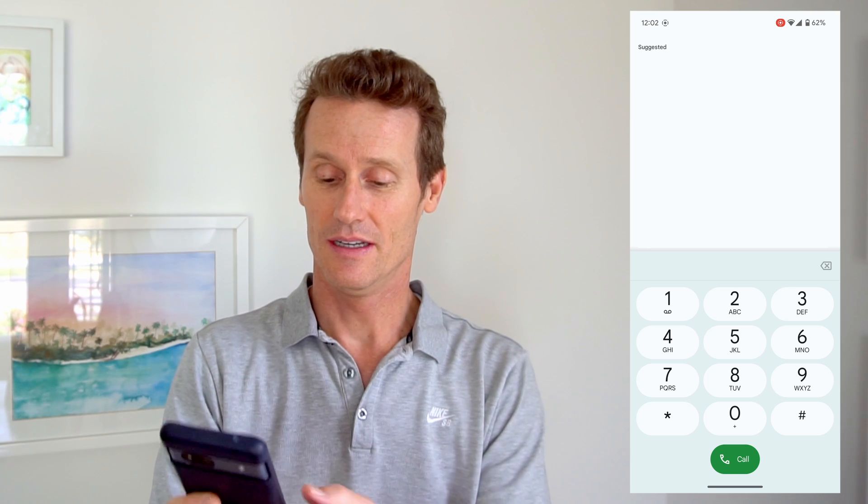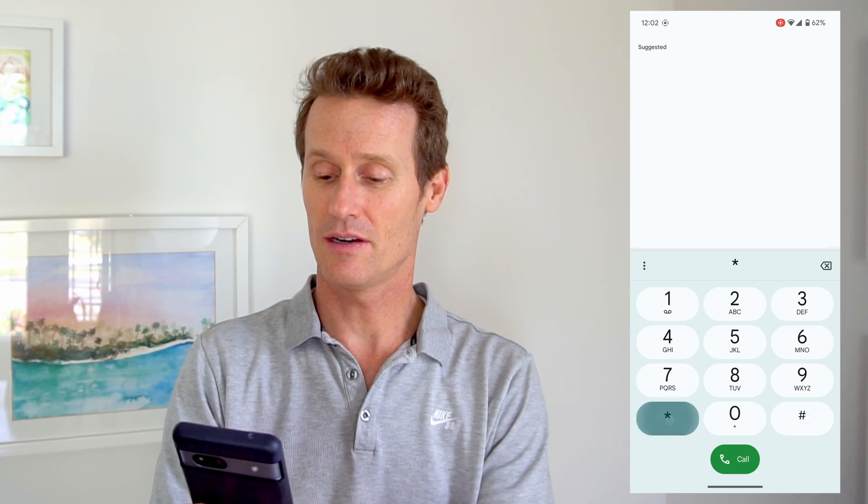You open your keypad up and the custom dialer code that you're going to want to type in: you hit star, pound, star, pound, four, six, three, six, and then pound, star, pound, star.